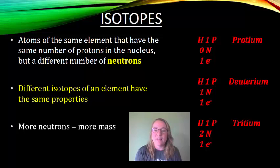If we look at element number one, hydrogen, you can see that hydrogen can come in three different forms. We have proteum, which has one proton, one electron, and zero neutrons. Or we could have deuterium, one proton, one neutron, one electron. Or we could have tritium, one proton, two neutrons, one electron.